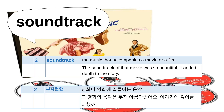Number two: soundtrack. A soundtrack is the music that accompanies a movie or film. For example, the soundtrack of that movie was so beautiful, it added depth to the story.